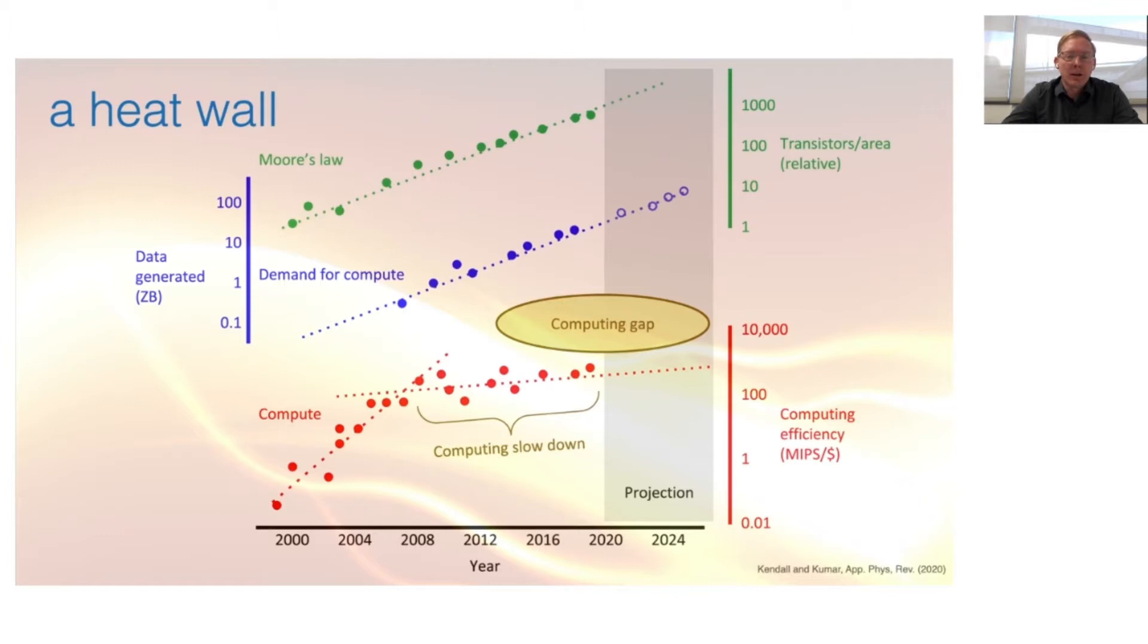Our demands for computing continue to increase. We always want more, and the demand for computing means we need to be able to do more computation. In the early 80s, we talked about the demand for computing being met by its shrinking dimensions and being able to do computations faster. We used to talk about the megahertz of our computers, the gigahertz of our processors.